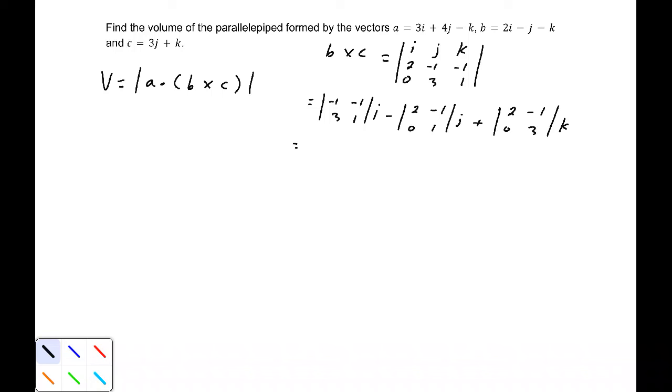Now if we find the determinant of each of those matrices, this should come out to be 2i - 2j + 6k. Let me just double check my arithmetic here. Yes, okay. That would be b cross c.